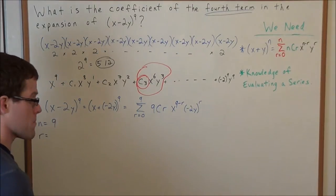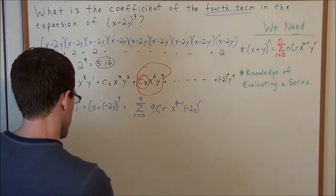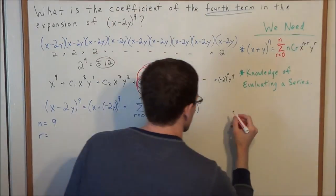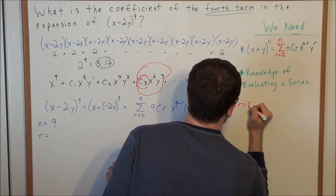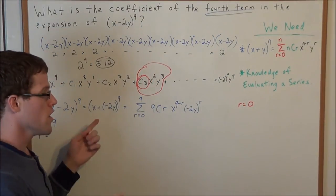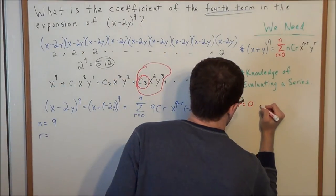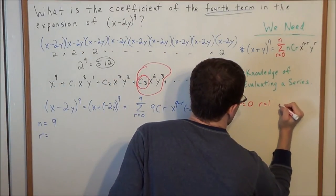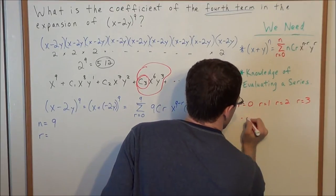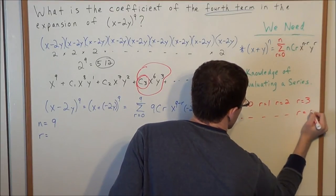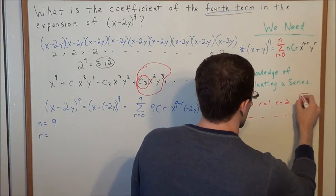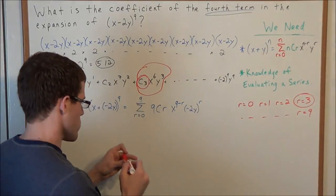This is the trap in the problem. We're looking for the fourth term, but this series starts at r equals zero. So when students get this problem wrong, they'll say r equals four. No — it starts at r equals zero, then r equals one, r equals two, r equals three, and this continues all the way to r equals nine. We need the 1, 2, 3, 4th term, so we're evaluating this for r equals three.